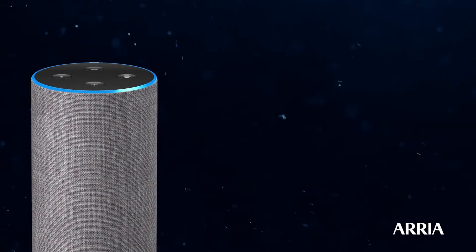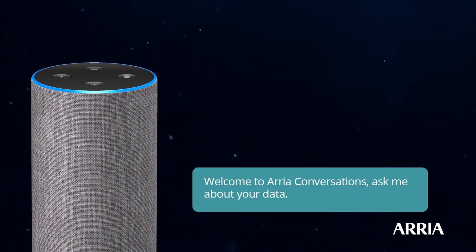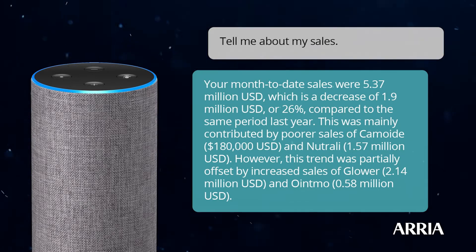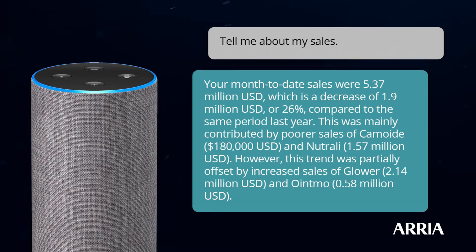Alexa, open ARIA. Welcome to ARIA Conversations. Ask me about your data. Tell me about my sales. Your month-to-date sales were $5.37 million, which is a decrease of $1.9 million, or 26%, compared to the same period last year. This was mainly contributed by poorer sales of Kamoid, $180,000, and Neutrali, $1.57 million. However, this trend was partially offset by increased sales of Glauer, $2.14 million, and Oipmo, $0.58 million.